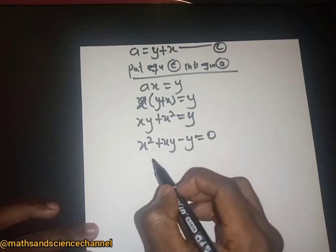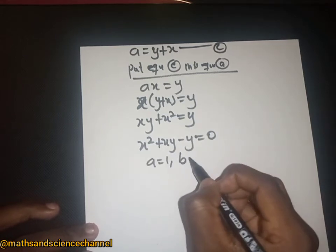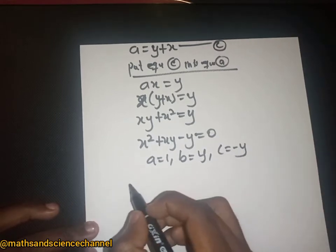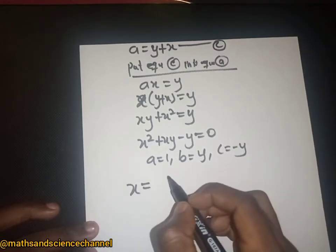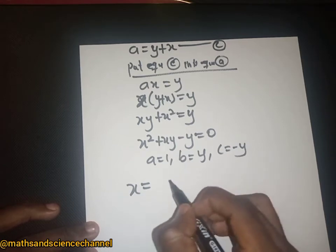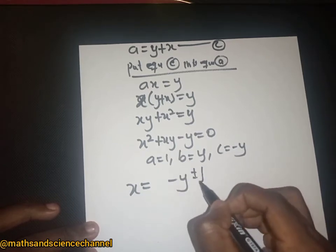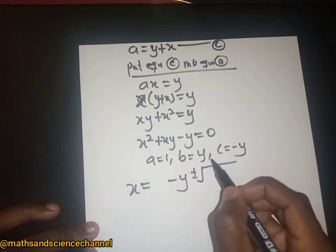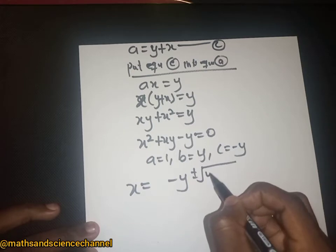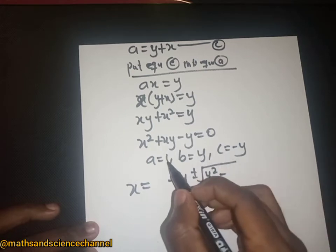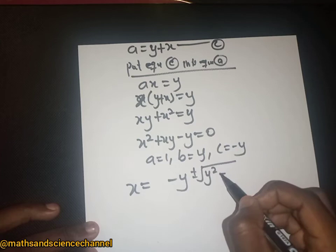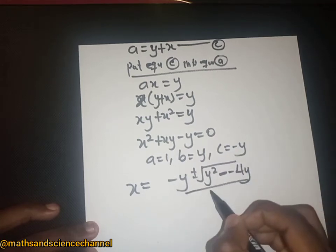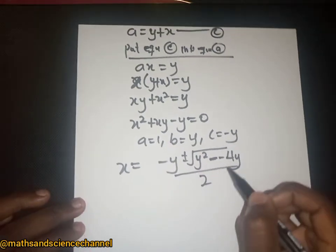Using the quadratic formula to find x: here a is 1, b is y, and c is negative y. Applying the quadratic formula: negative b plus or minus square root of (b squared minus 4ac), which is y squared minus 4 times 1 times (negative y), divided by 2a which is 2.